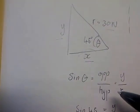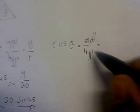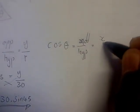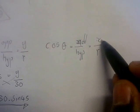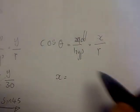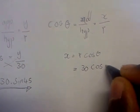For the horizontal component side, x is found using cosine: cos θ = adjacent over hypotenuse. So cos θ = x/r. To find x, our horizontal component, we cross-multiply: x = r cos θ. Our r is 30 newtons, so the horizontal component is 30 cos 45.